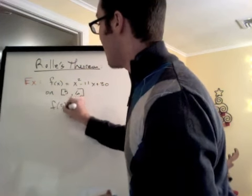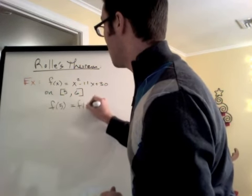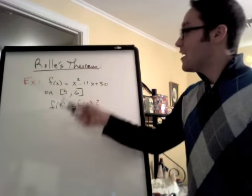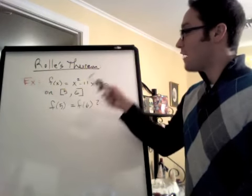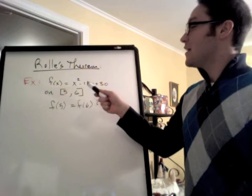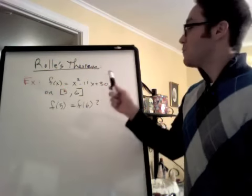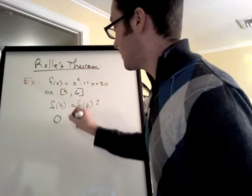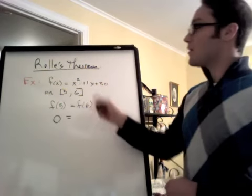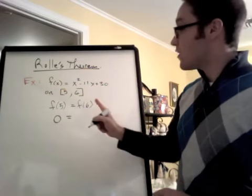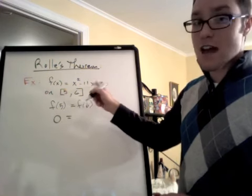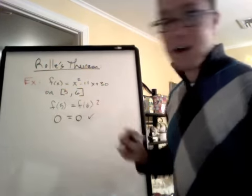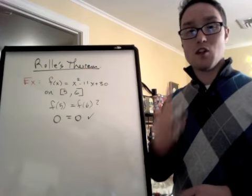So is f(5) equal to f(6)? If I plug in 5, I get 5² = 25 - 55, that's -30 + 30 = 0. So f(5) = 0. Double check me. If I plug in 6, I should also get 0. 36 - 66, that's -30, plus 30 is 0. So this satisfies the hypothesis of Rolle's theorem, which means we can use it.